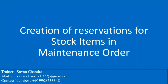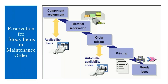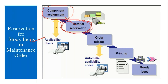We will start with creation of reservations for stock items in the maintenance order. From the PM side, whenever they want to repair a machine or equipment, they create a maintenance order. For the repair activity, they need some materials — spare parts like nuts, bolts, gaskets. When those materials are assigned in the maintenance order as stock items, the system automatically creates a reservation. I will show you this in the system.